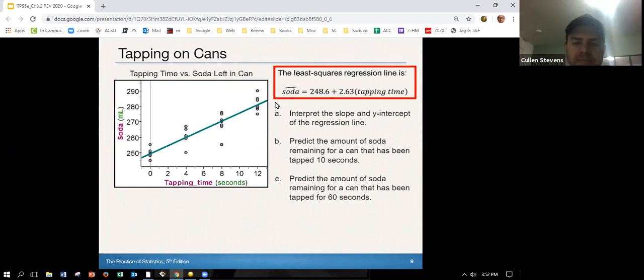So interpret the slope and y intercept of the regression line. You're just looking at the 2.63, right? And we can think that as a slope 2.63 or 2.63 over 1. So if we look 2.63, that's how much is left in the can. We can see that from slope is change in y over change in x. So here's y, soda. Here is x tapping time, so 2.63 over 1. So on average, we would predict that there is about 2.63 additional milliliters of soda left for every additional one second of tapping time.